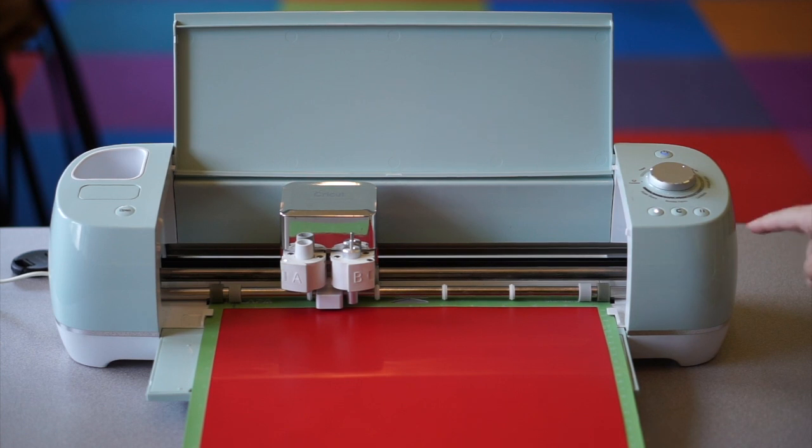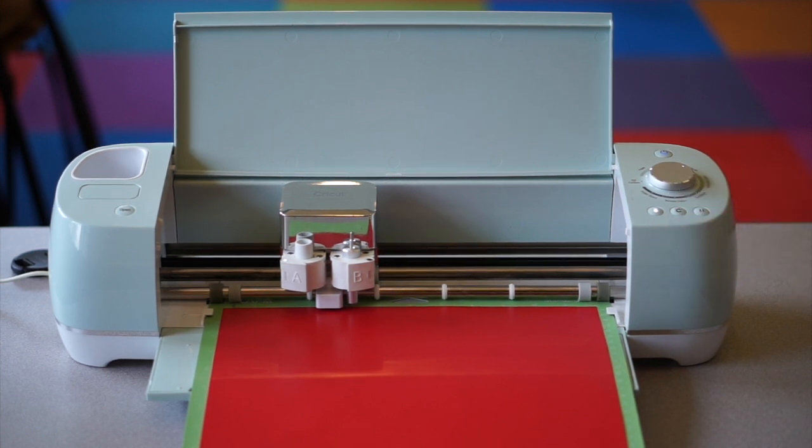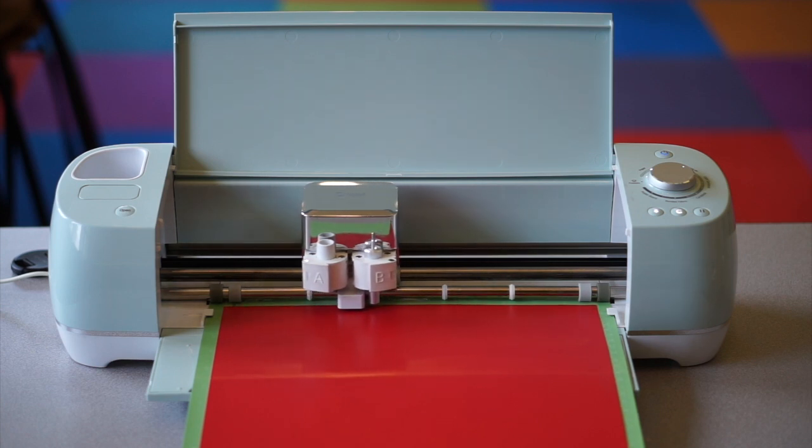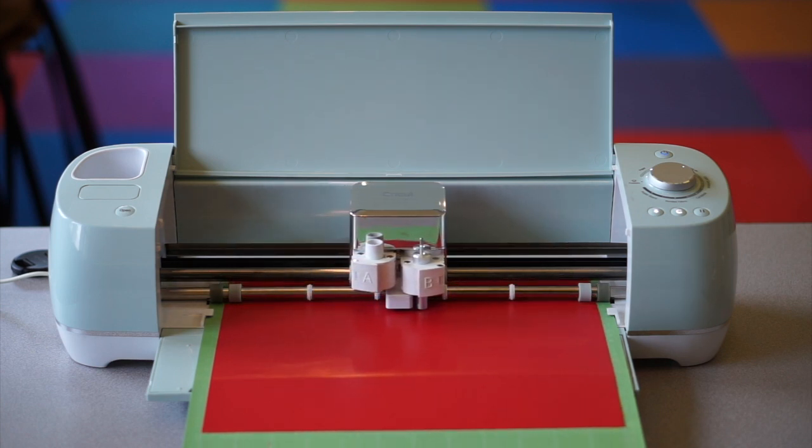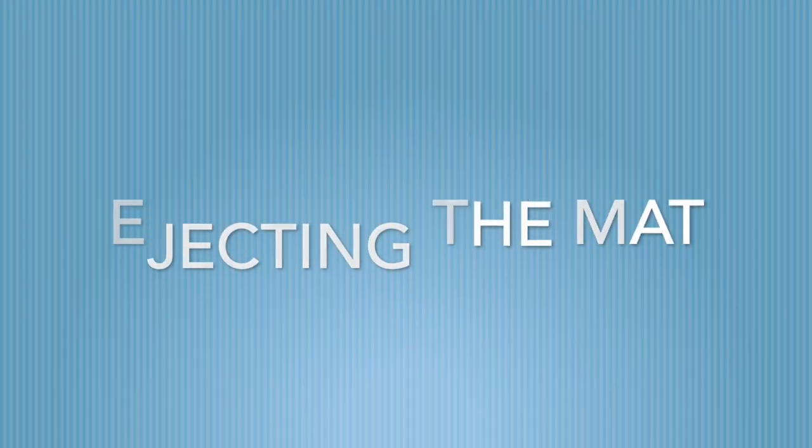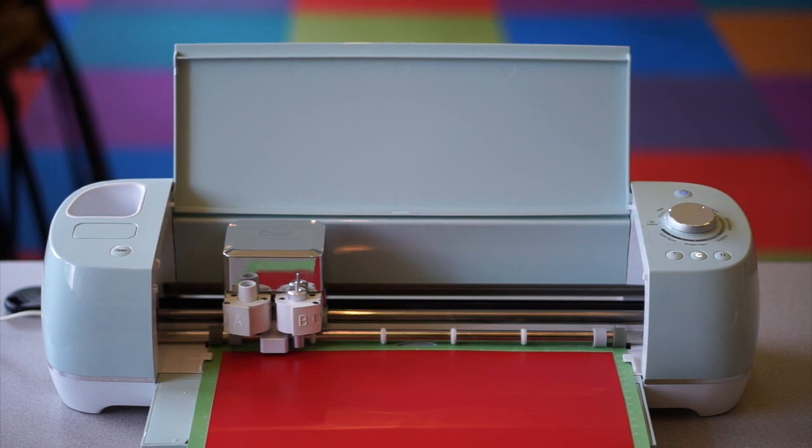Starting the cut is super simple. You're just going to hit the blinking C and the Cricut will start cutting out your design. Once the cut is done, you're going to hit the blinking arrows to eject the mat.